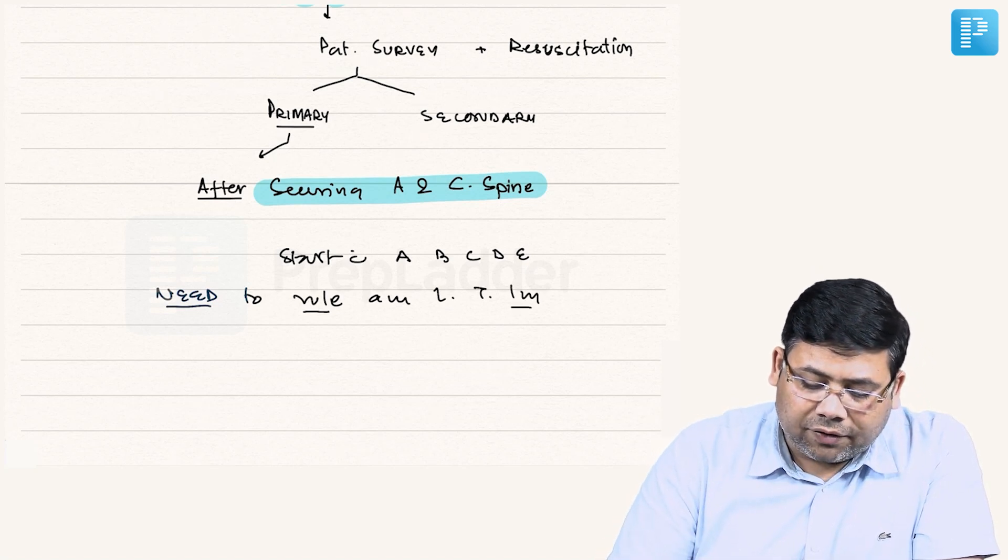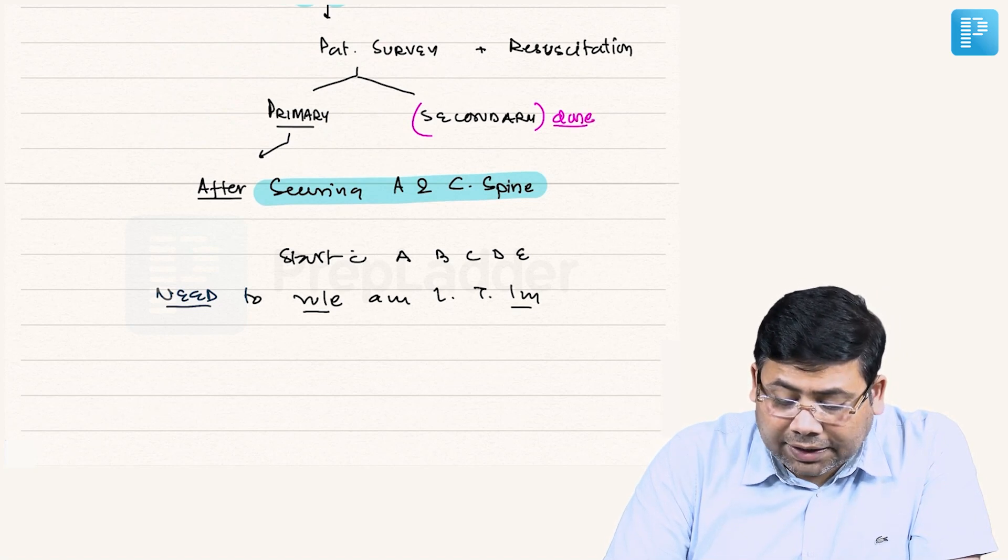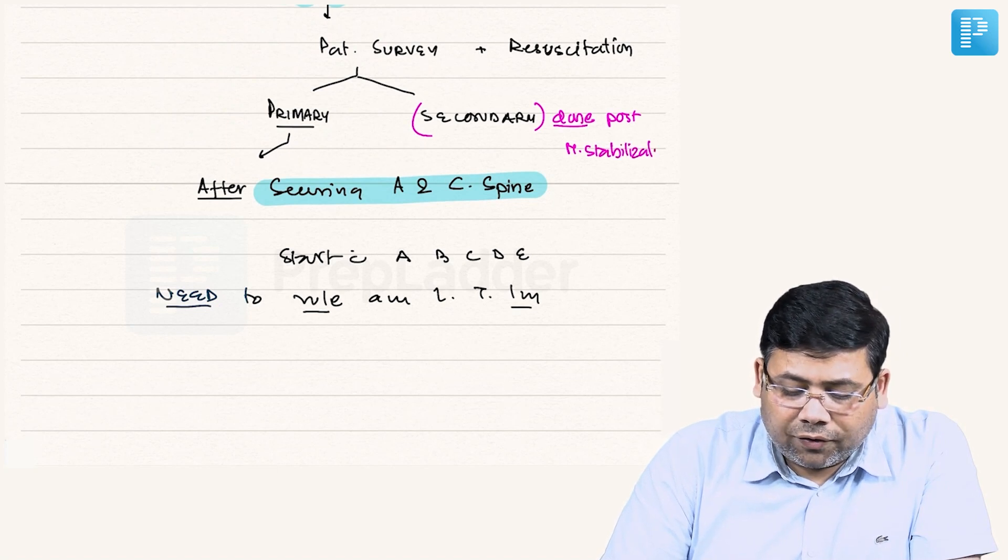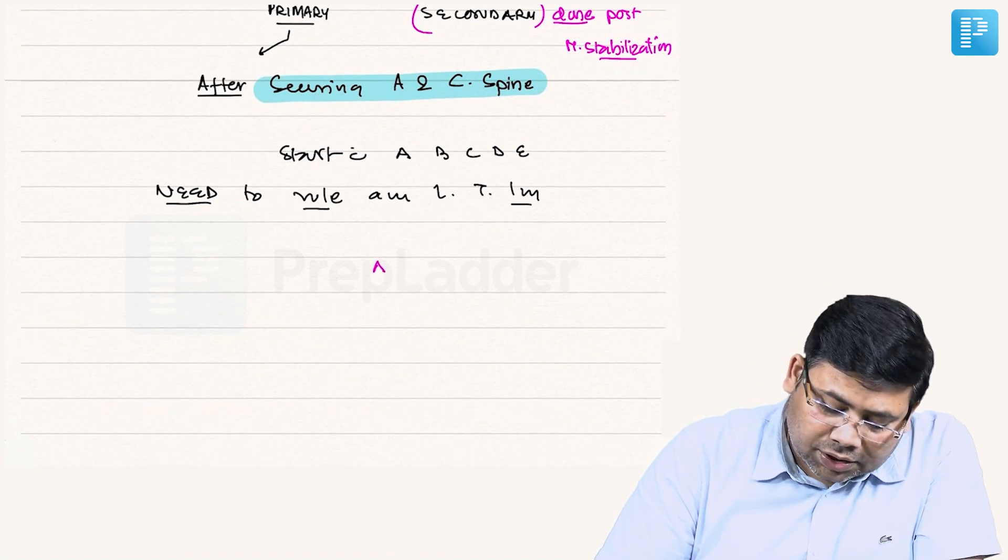Now what is the concept of secondary survey? This is done post-hemodynamic stabilization. Why? The logic is that we want to furnish information which can modify the outcome.